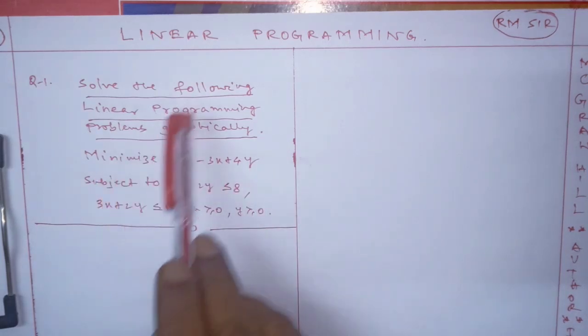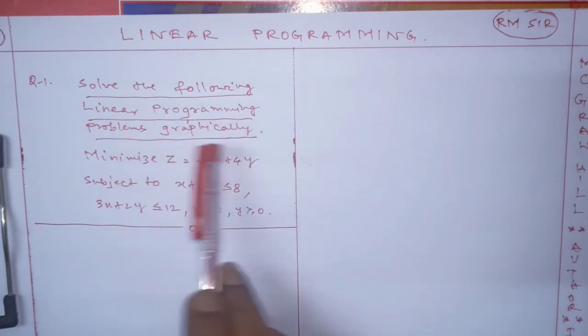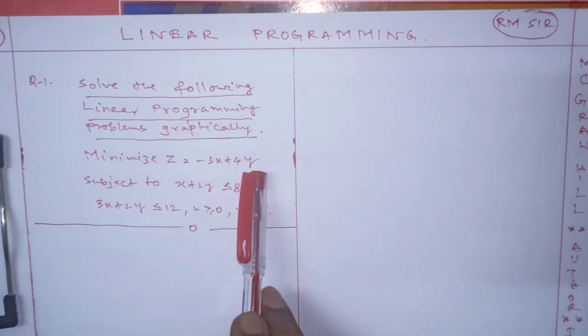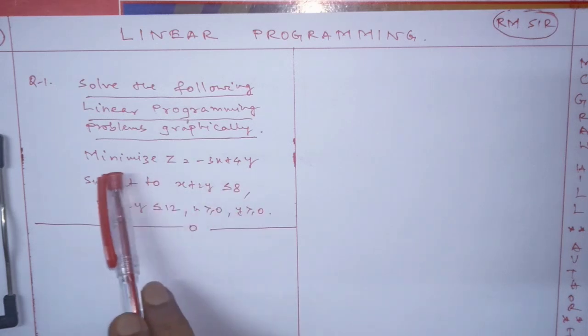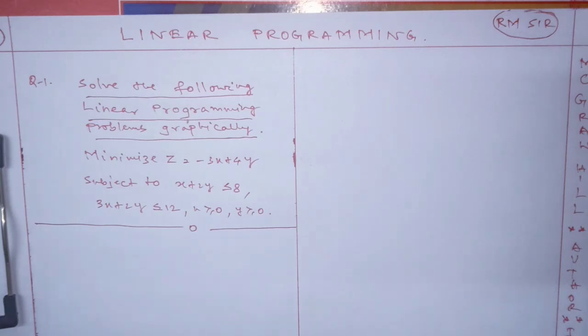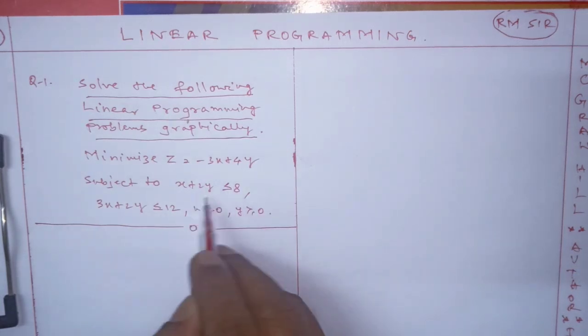The problem written here says: solve the following linear programming problem graphically. Minimize z equals minus 3x plus 4y, subject to these conditions. There are two types of problems - minimize or maximize. This is minimize z equals minus 3x plus 4y.